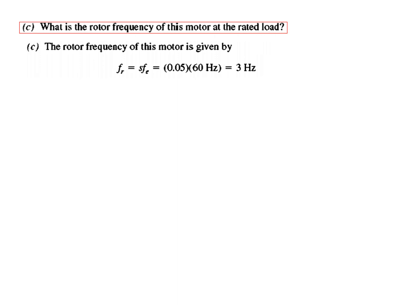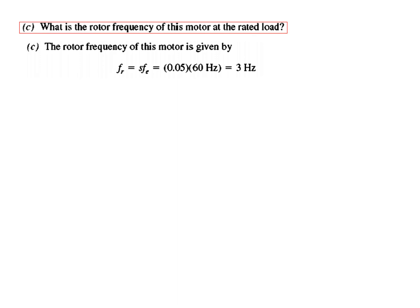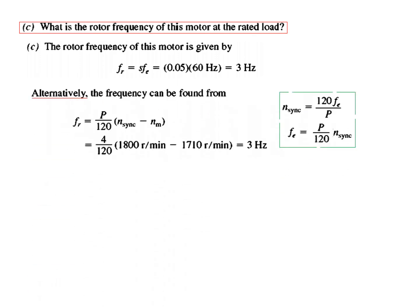For the rotor frequency, using f_R = S × f_E: plugging in S = 0.05 and f_E = 60 Hz, the rotor frequency is only 3 Hz. There is another way to calculate this: from N_sync = 120 f_E / P, we get f_E = P / 120 × N_sync. Applying this for f_R, we write f_R = P / 120 × slip speed (the difference between the two speeds), and plugging that in also gives the same answer.